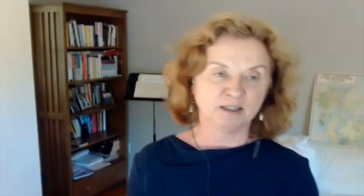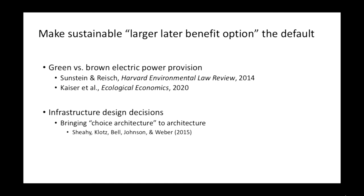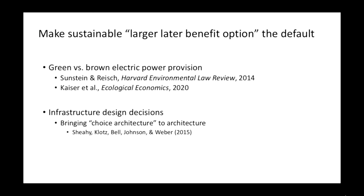Can we put query theory — and changing the default option — to work to help reduce the status quo bias seen in environmental decisions and climate change mitigation? There's substantial evidence reviewed by Sunstein and others that it makes a huge difference when green electricity generation is a default offered by utility companies. People are much more likely to choose it than when brown electricity is the default.